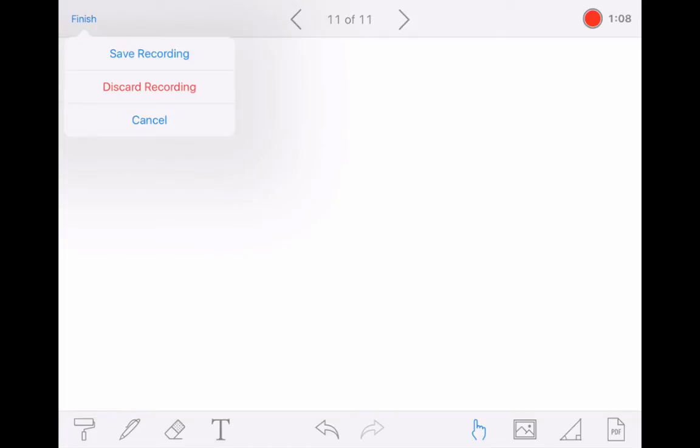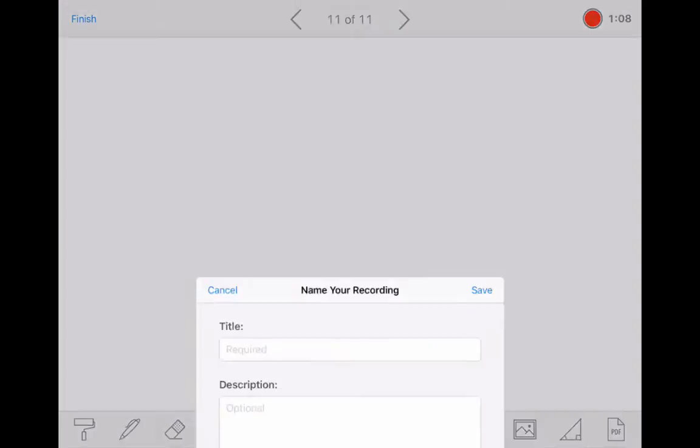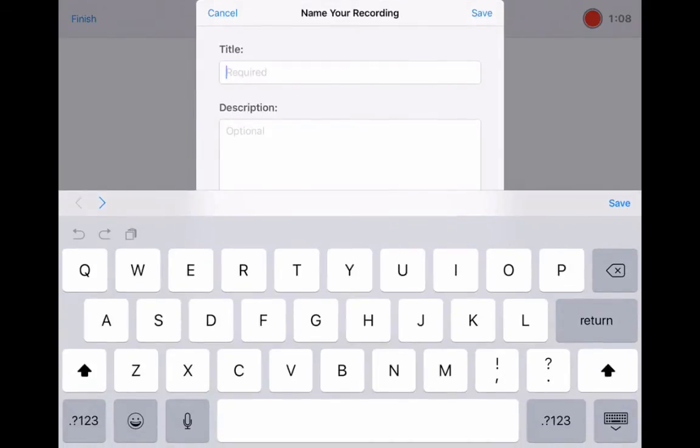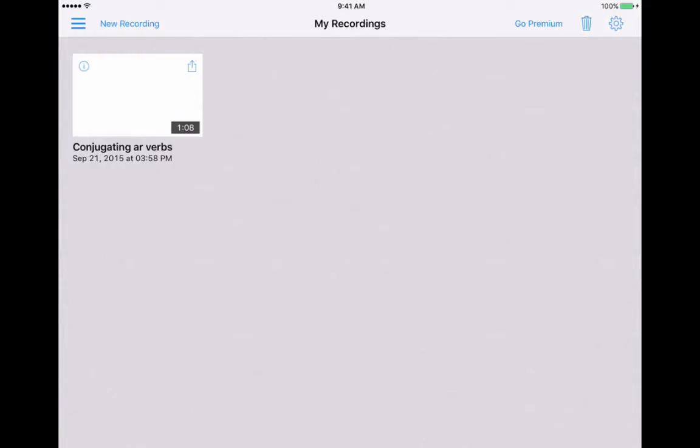Notice that I didn't sign into an account to do this. I didn't really do anything other than just open the app and start working. But at this point, I either have to discard the recording or I have to save it. So I'm going to tap Save Recording. I'm going to give it a title. You can give it a description if you'd like. And then just tap Save. Now, this lesson has been saved just to my iPad. No one else can see this. It's just on my iPad. But really, that's not very useful to me to create a lesson that's just on my iPad.